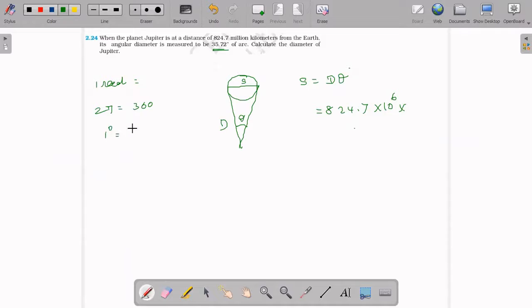Then one degree is equal to pi by 180 radian. That's right.